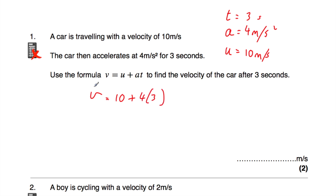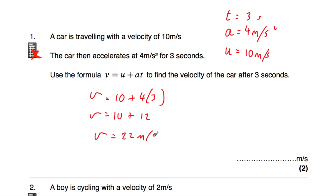So v is equal to 10 plus 4 times 3. 4 times 3 is 12, so v is equal to 10 plus 12, and 10 plus 12 is 22. So v, the final velocity of the car, is 22 metres per second. The final velocity of the car after 3 seconds is 22 metres per second.